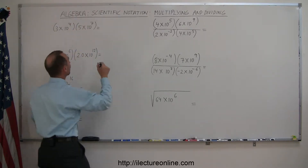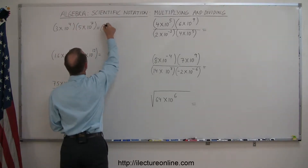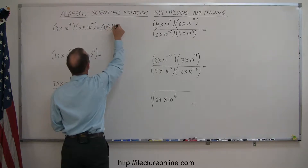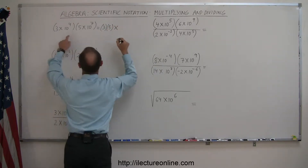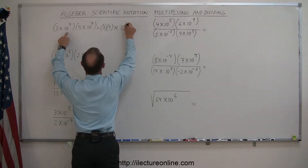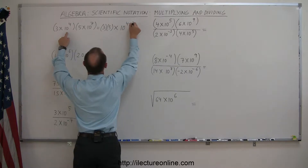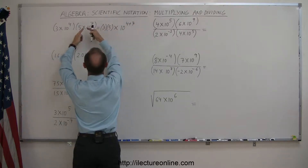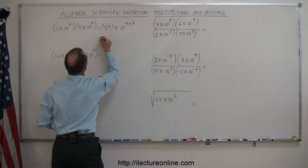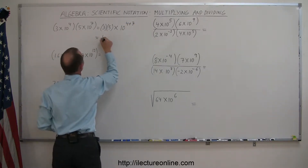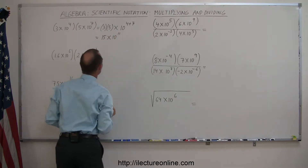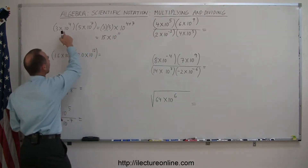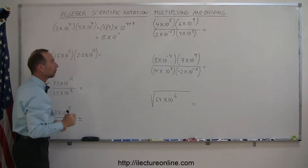So the first example becomes 3 times 5, times 10 to the 4 plus 7. We simply add the exponents, giving us 15 times 10 to the 11th power. That's the product of those two numbers.